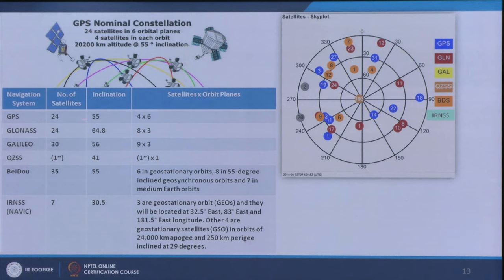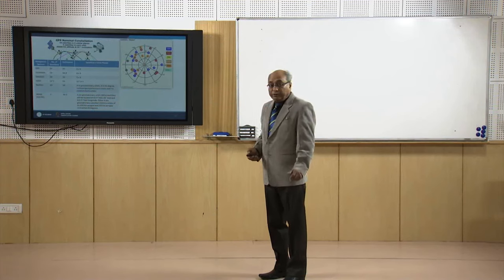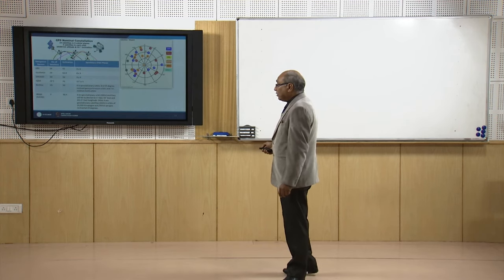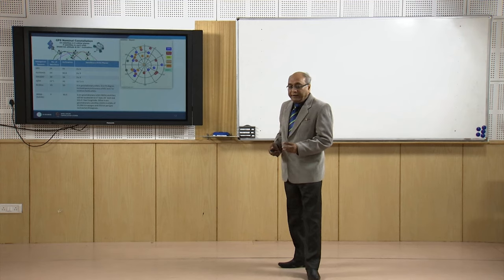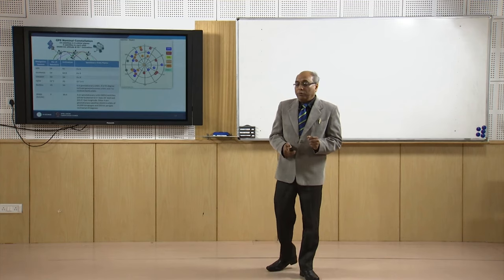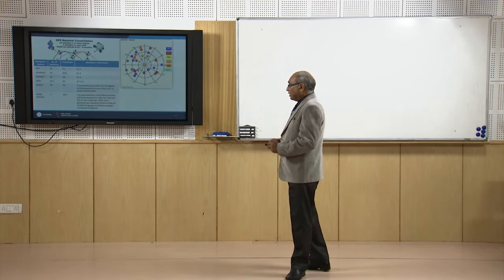GPS is a global system with 24 satellites. GLONASS is also a global Russian system with 24 satellites. GALILEO is mainly focused for Europe but has 30 satellites planned. The Japanese system is purely regional with 1 satellite. BeiDou is a global Chinese system with 35 satellites planned. India's IRNSS or NAVIC is a regional system with 7 satellites planned — 3 in geostationary orbit and 4 at different locations. Different countries, per their requirements and to avoid dependency on the American system, have developed their own navigation systems — India, China, Russia, Japan, and others.